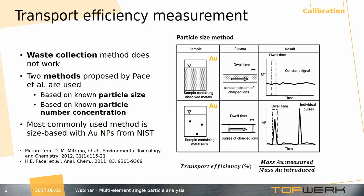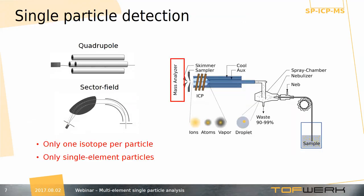Another issue with single particle ICP-MS is particle detection. Almost all commercial ICP mass spectrometers are based either on quadrupole or sector field mass analyzers. The limitation of these two mass analyzers is that they measure only one isotope at a time, which means you can look at only one single isotope per particle. Some modern fast quadrupoles exist, like the one from Perkin Elmer's NexION instrument, but unfortunately they can measure only two isotopes per particle and can give only qualitative data. These mass analyzers can look only at particles composed of a single element.